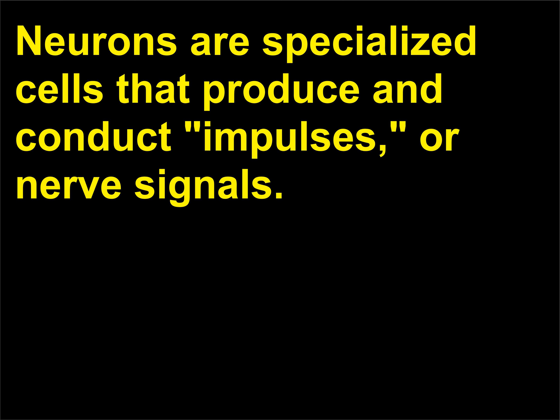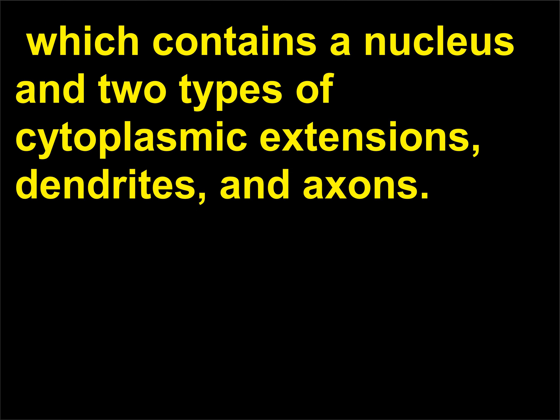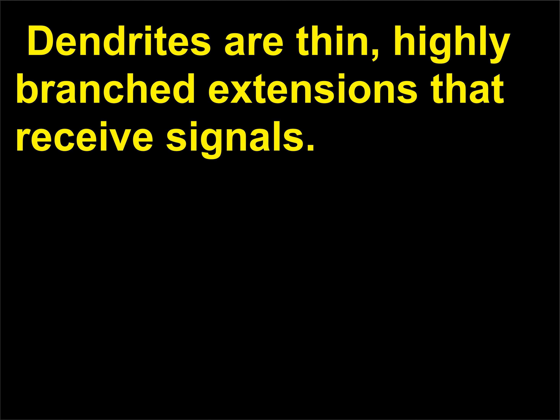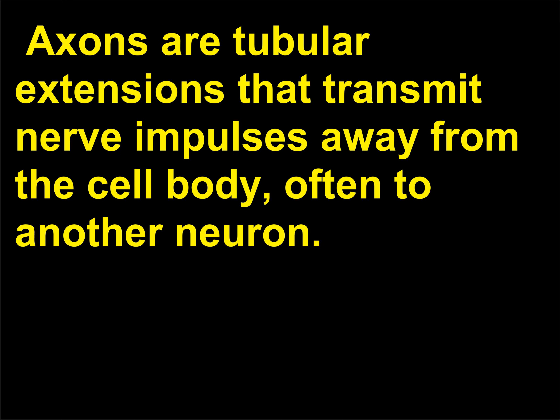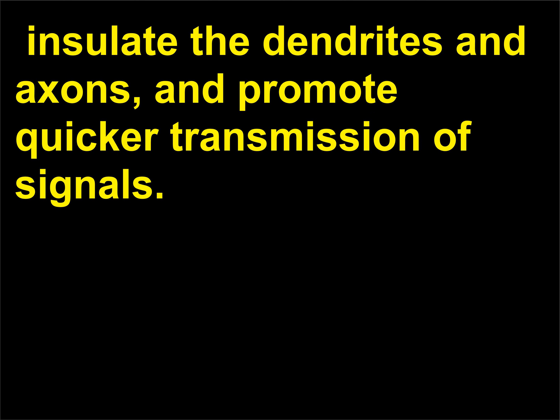Neurons are specialized cells that produce and conduct impulses, or nerve signals. Neurons consist of a cell body, which contains a nucleus and two types of cytoplasmic extensions, dendrites and axons. Dendrites are thin, highly branched extensions that receive signals. Axons are tubular extensions that transmit nerve impulses away from the cell body, often to another neuron. Nerve tissue also has supporting cells, called neuroglia or glial cells, which nourish the neurons, insulate the dendrites and axons, and promote quicker transmission of signals.